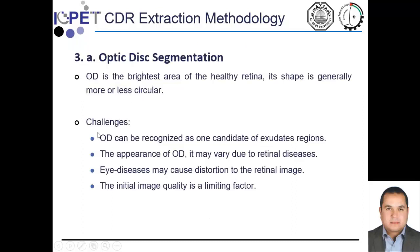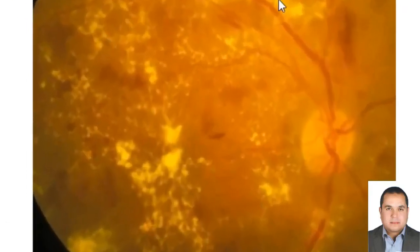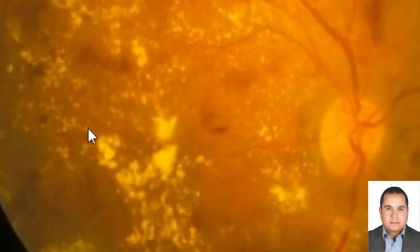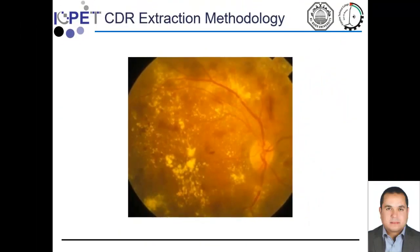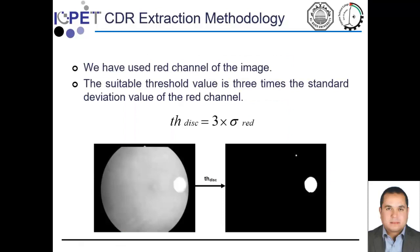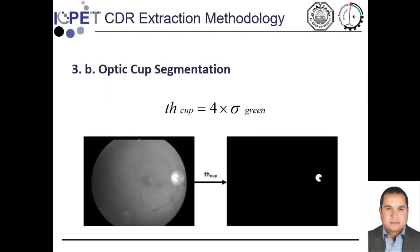For the optic disc segmentation, we face different challenges. The optic disc can be recognized as one candidate of exudates — this is the major challenge we faced. We used a threshold of three times the standard deviation of the red channel in order to extract the optic disc from the red channel. For the optic cup, we used four times the standard deviation of the green channel to extract it from the green channel, as we can see here.